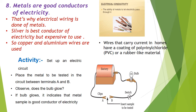Activity to show that metals are good conductors of electricity: we can see the setup with a battery, a bulb, and clips. When we place a plate of metal in between the clips, the circuit completes and the bulb glows. The bulb glowing indicates that the metal conducts electricity and the circuit is complete.